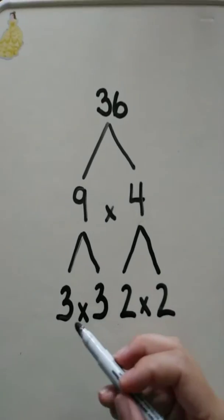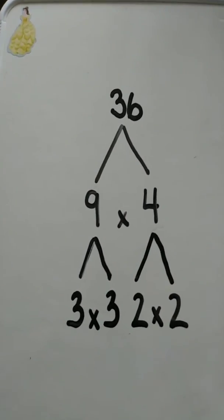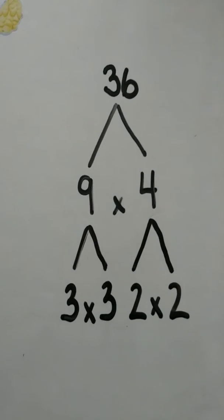And I know my prime numbers, and I hope you do too. So, looking at the bottom here, I have a 3, a 3, a 2, and a 2. And yes, they are both prime numbers, so we do not have to decompose them anymore.